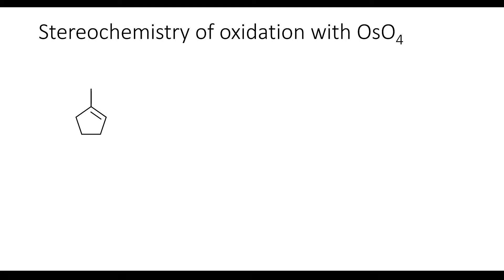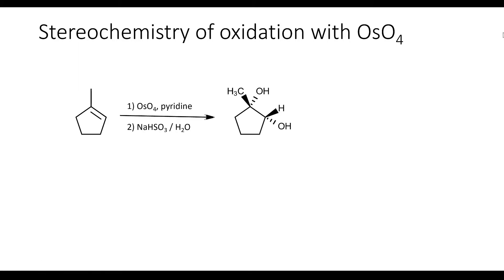Let's take a closer look at the stereochemistry of this reaction. The addition happens in a syn fashion, and if the resulting product has a stereocenter, then we're going to get enantiomers, because the syn addition of the diols could happen from either the top or the bottom of the alkene with equal probability. So when this oxidation reaction produces stereocenters, we're going to get a racemic mixture of the products.